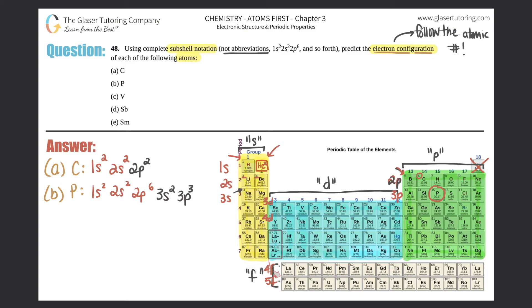Part c: vanadium. Vanadium is here on the periodic table, so we go even farther — past phosphorus and continue. Everything through phosphorus is the same: 1s2, 2s2, 2p6, 3s2. You're at sodium (number 11), so add 3s2. Then 3p — collect all six: 3p6. Now you're down to number 19.